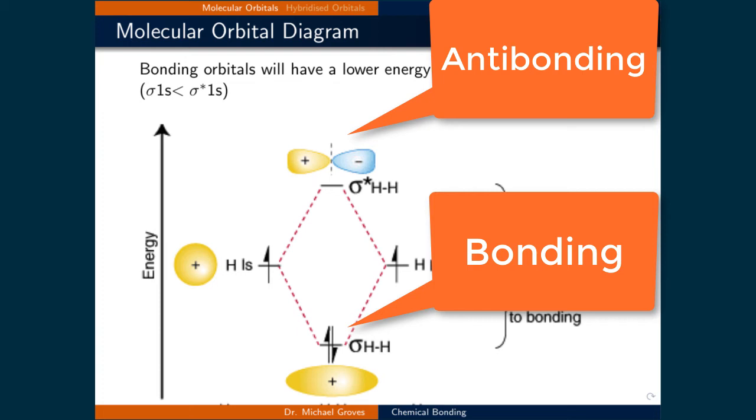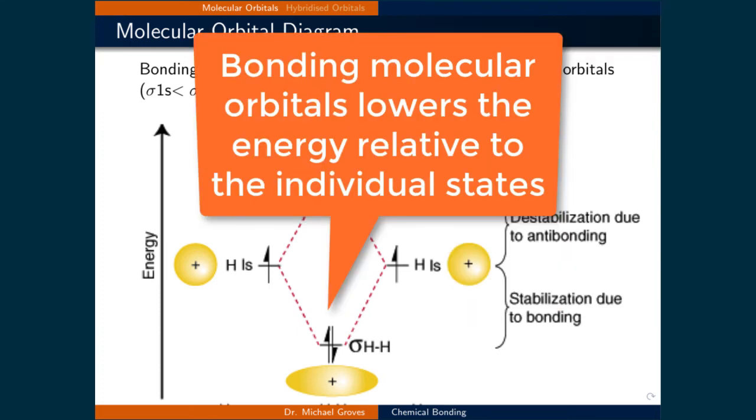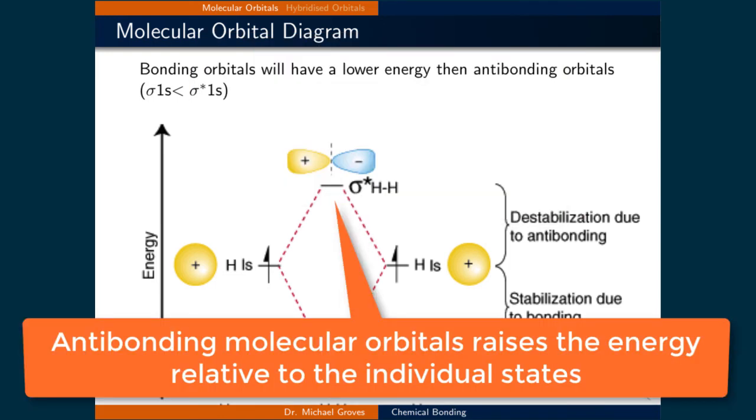The energies of the bonding and antibonding orbitals are predicted using the variational principle with a suitable trial wave function. From that calculation, we get a bonding molecular orbital and an antibonding molecular orbital. Since the energy of the bonding orbital is calculated to be lower, it stabilizes H2, while the antibonding orbital destabilizes H2.